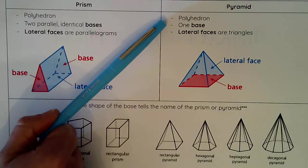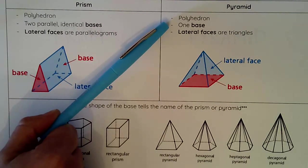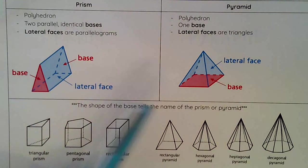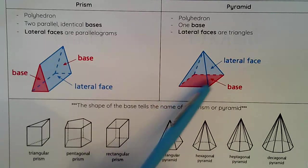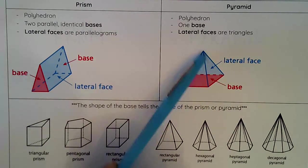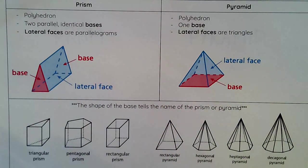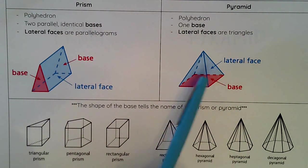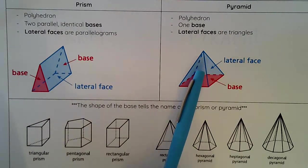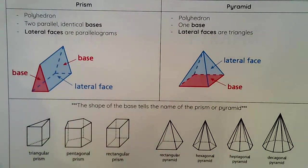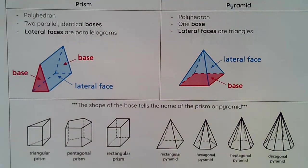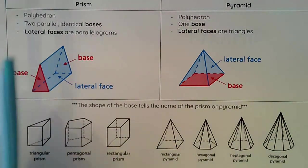Moving on to pyramids: a pyramid is also a polyhedron. It has one base, compared to the prism which has two bases. Opposite of that base is a vertex, and that vertex connects all of the lateral faces together. All of the lateral faces of a pyramid are triangles, and all those triangular lateral faces come to a vertex opposite of the base.